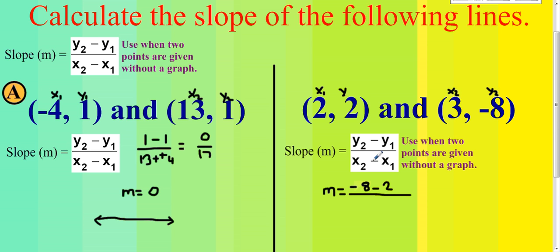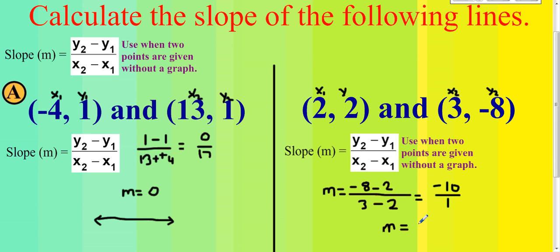In the denominator, x2 minus x1 gives us a result. The numerator simplifies to negative 10, and the denominator simplifies to 1. Anything over 1 equals just the numerator, so negative 10 over 1 is negative 10.